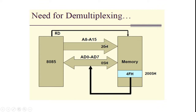We have now loaded 2005 hex onto the address lines, and these address lines travel from 8085 to memory. Once the location 2005 hex is accessed, the next step is for the 8085 to assert RD bar equal to 0. RD bar stands for Read — it signals that the microprocessor wants to read data from that location. Since RD bar is an active low signal, reading is performed only when RD bar equals 0; when RD bar equals 1, no reading operation is performed.